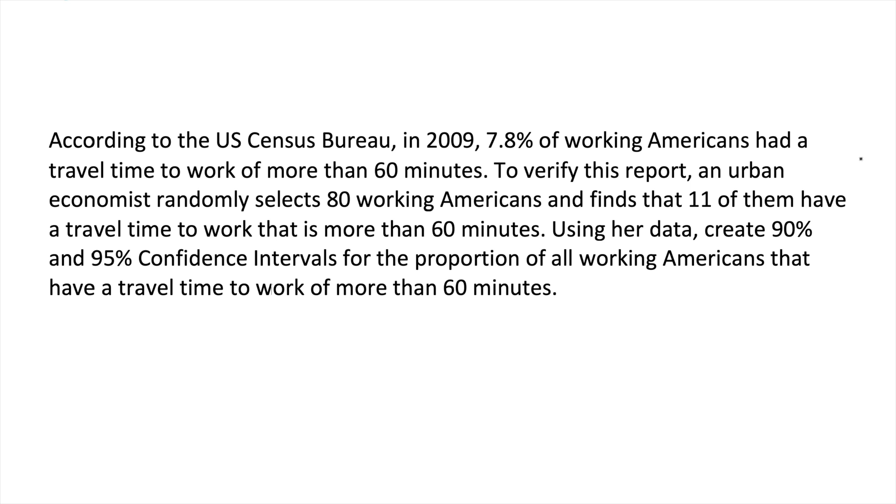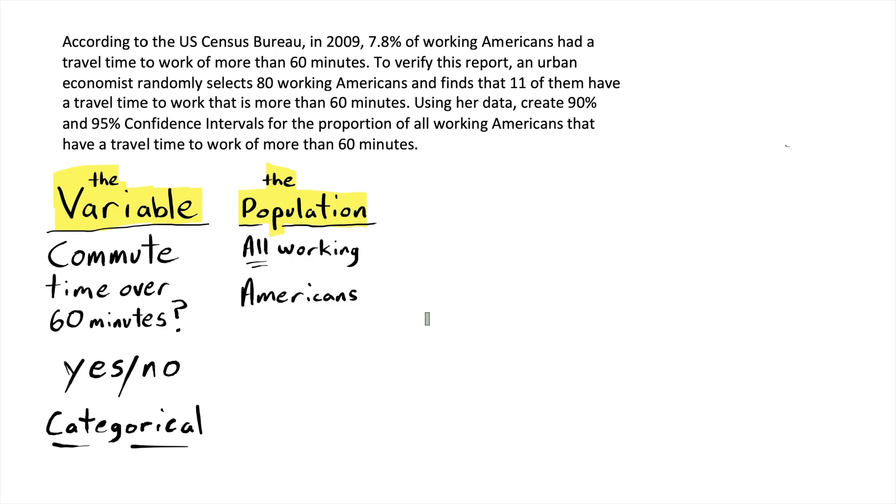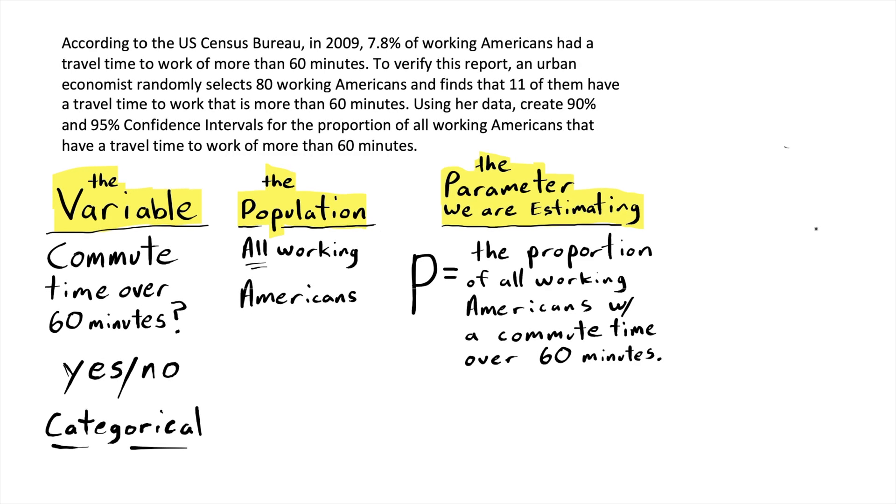So as is typical with problems like this, there's a lot of information given to us and it's going to be helpful to sort through it a bit and figure out what we're dealing with. So a great place to start is the variable, and in this case we're determining whether or not a working American has a commute time of over 60 minutes. Population for this problem is all working Americans. This is a large group of individuals difficult to know about precisely, and there is a number that describes this population, a parameter, that is difficult to know so we'll be estimating it. That's the point of this confidence interval.